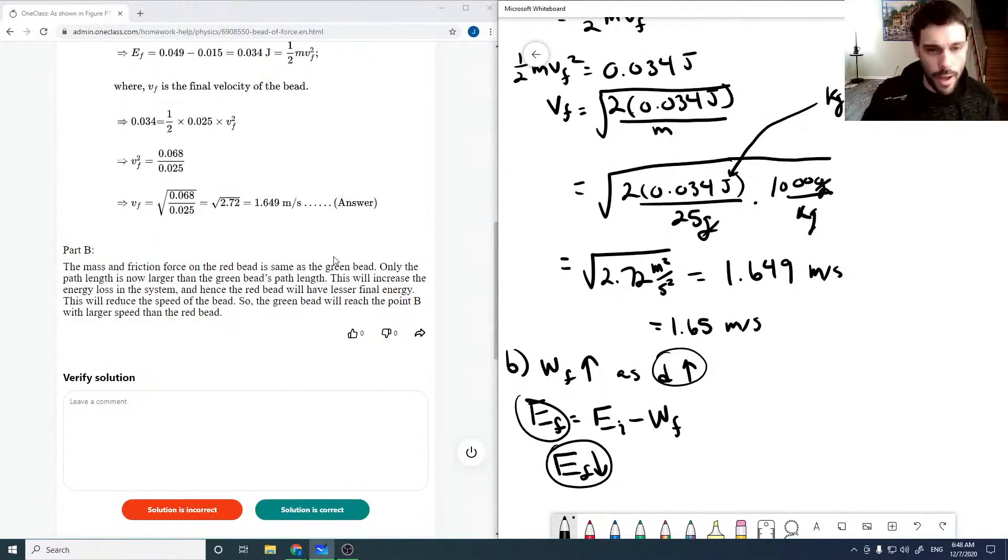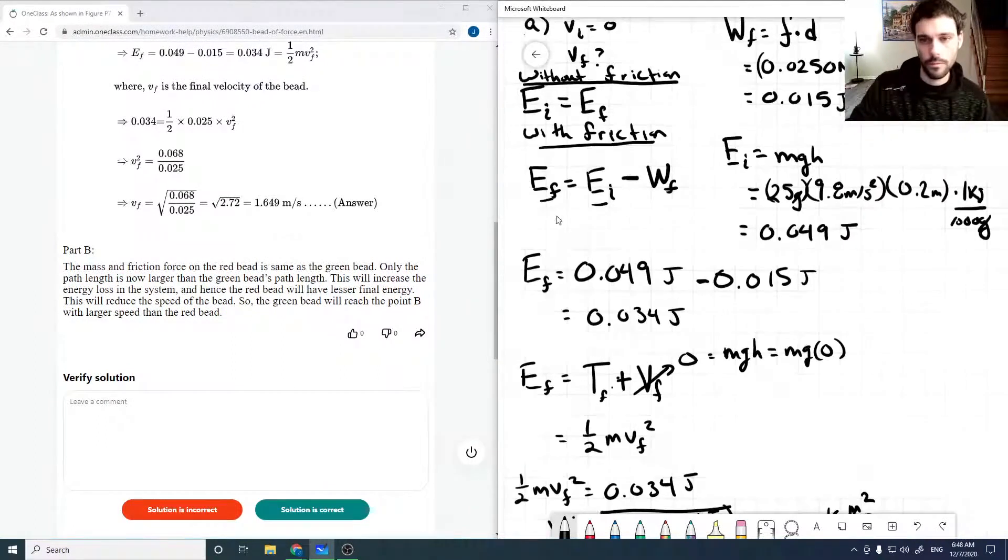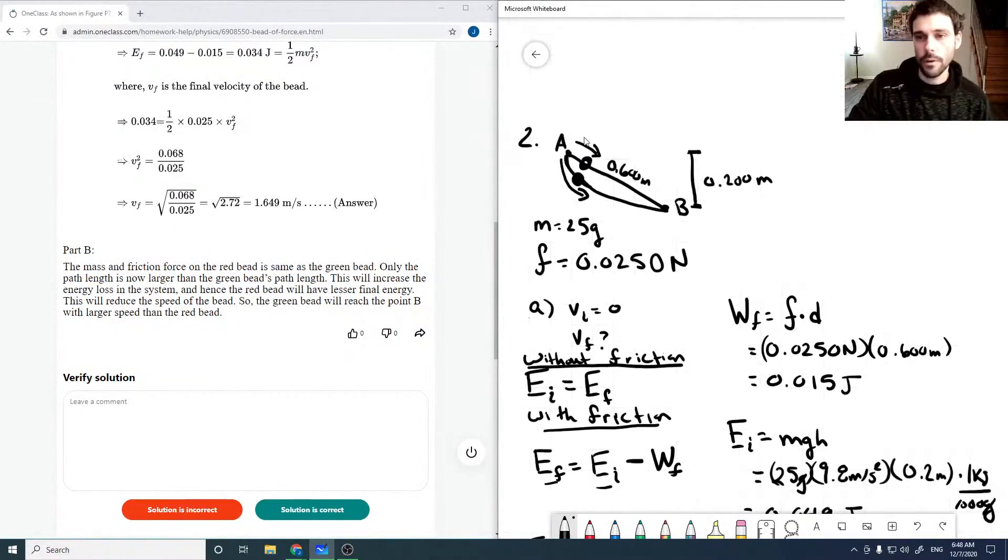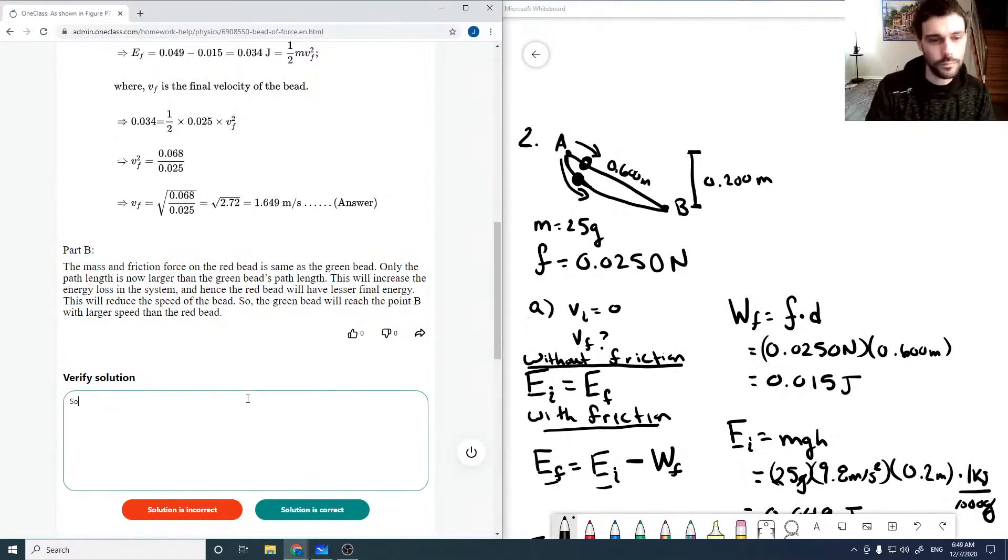And then, yeah, for part B, the mass and friction is the same. So the path length is now larger for the lower path, increasing the energy loss. So it reduces the speed of the lower bead, which arrives first is hard to say, I would say. But I presume the top path should arrive faster. So I presume the top path should be faster. So let's say the solution is correct.